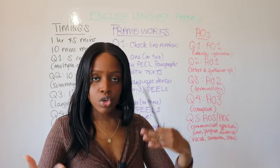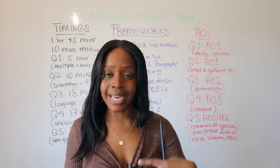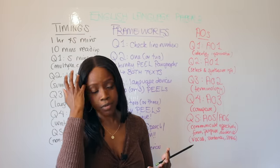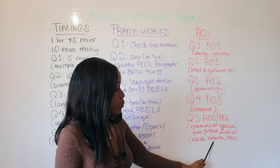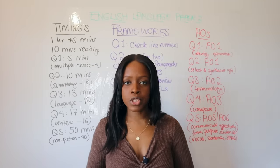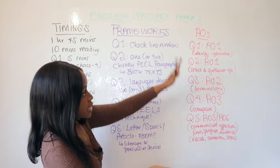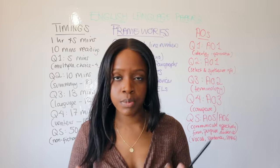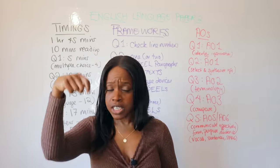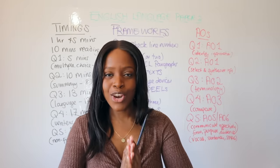AO6 covers spelling, punctuation, and grammar, as well as ambitious vocabulary. Rather than 'sad', use 'melancholic'; instead of 'happy', try 'jovial'. Also use a range of short and long sentences in your writing. That's Paper Two in a nutshell — keep these assessment objectives in mind when practising, because ticking all of those boxes is exactly what will earn you that great grade.